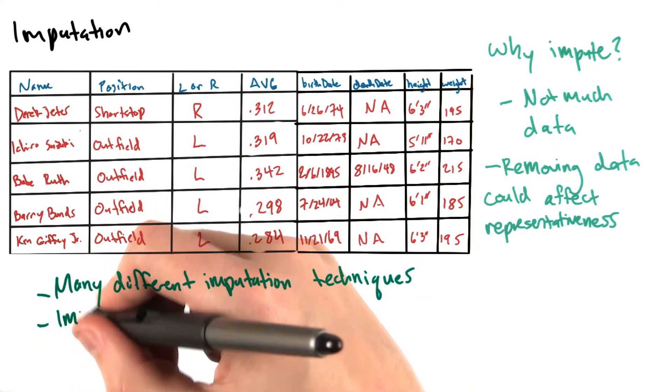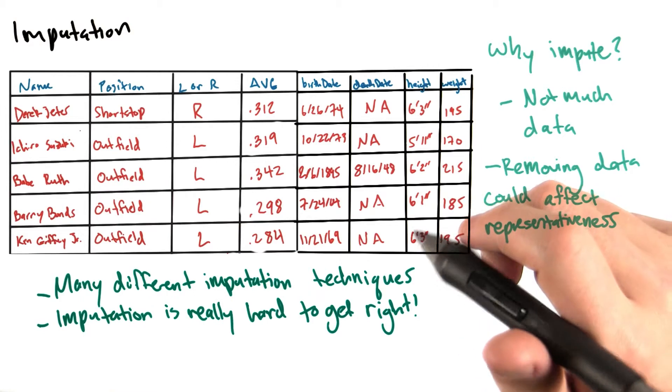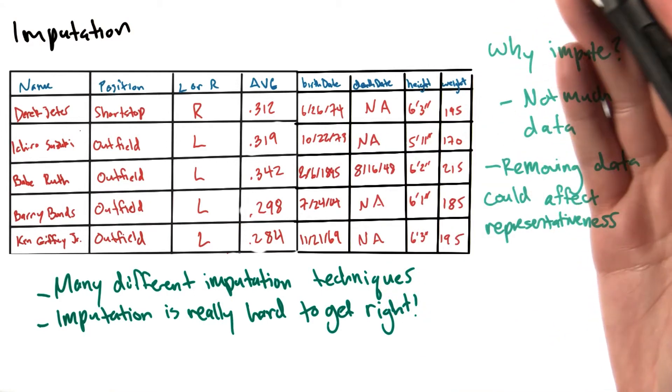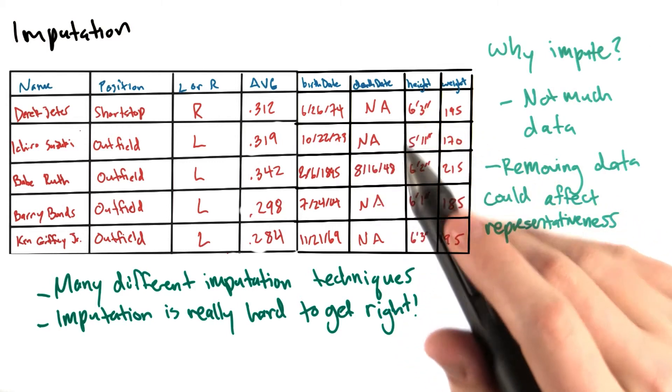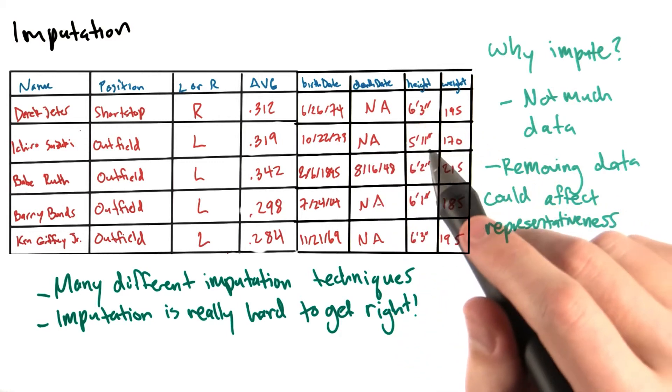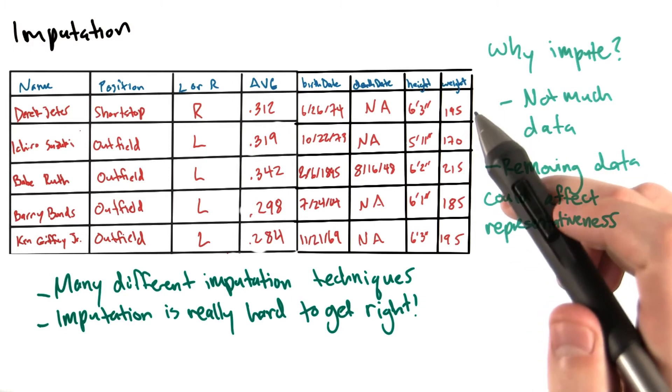Let's note that imputation is a really hard problem. Each of the methods we'll discuss introduces certain biases or inaccuracies into your data set. We're discussing some of the most simple ways to impute data, but much more sophisticated and robust methods are out there.